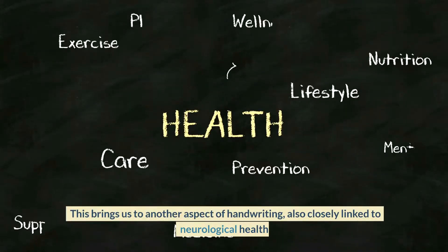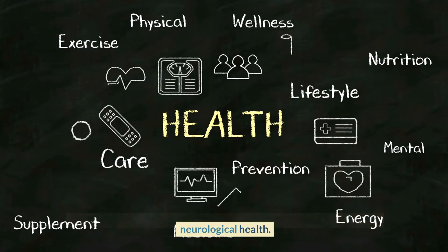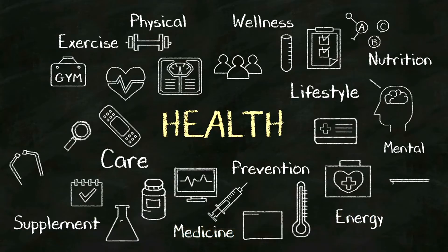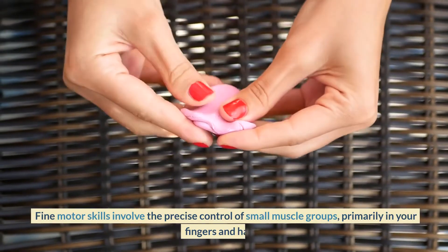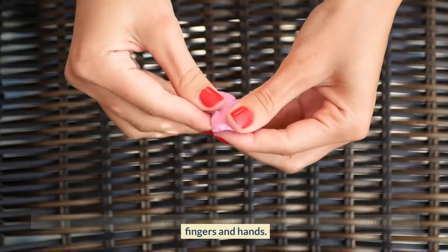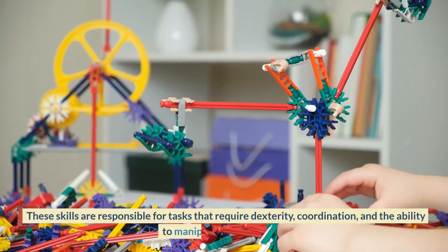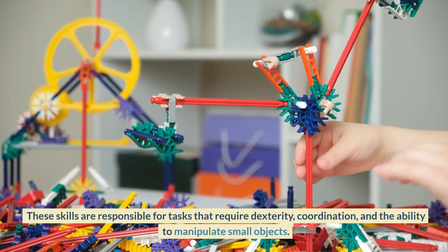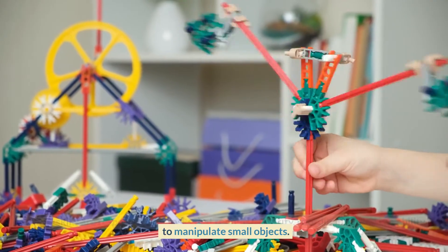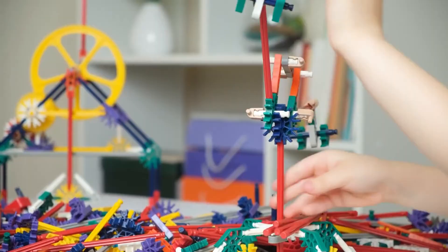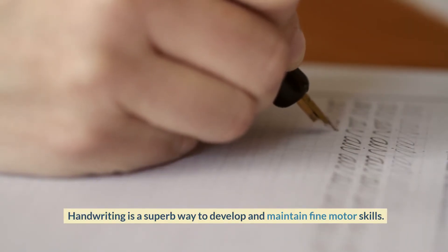This brings us to another aspect of handwriting, also closely linked to neurological health. Number five, fine motor skills. Fine motor skills involve the precise control of small muscle groups, primarily in your fingers and hands. These skills are responsible for tasks that require dexterity, coordination, and the ability to manipulate small objects. Handwriting is a superb way to develop and maintain fine motor skills.